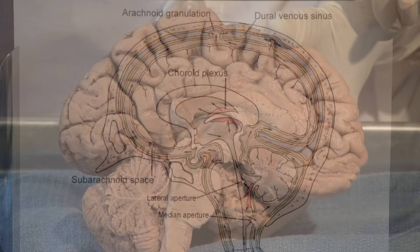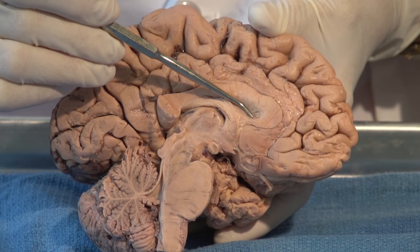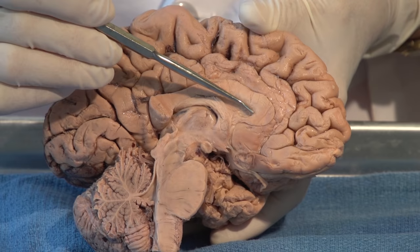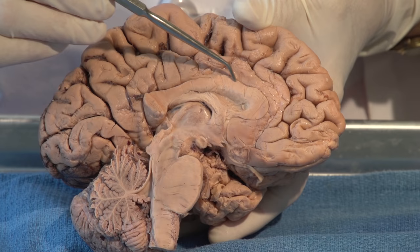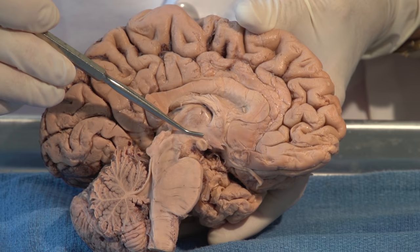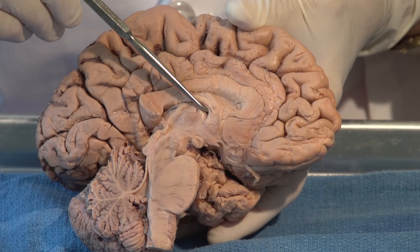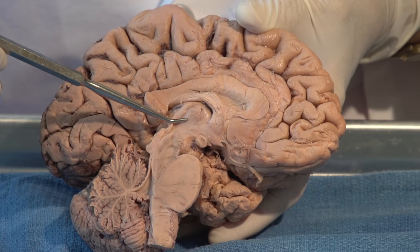Let's look at a gross specimen. Here we have a left hemisphere, mid-sagittal section. There is a curtain or septum that keeps the lateral ventricle, which is behind it, separated from the rest of the ventricular system. This is the corpus callosum, uniting the hemispheres through axonal connections. This is another band of fibers called the fornix. This is the surface of the thalamus, which is also the lateral wall of the third ventricle. This hole here is the interventricular foramen that goes out into the lateral ventricle. And here is the third ventricle.